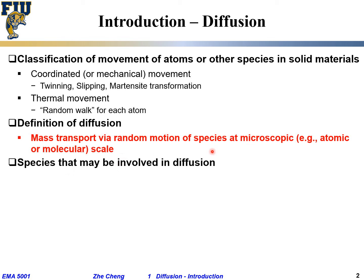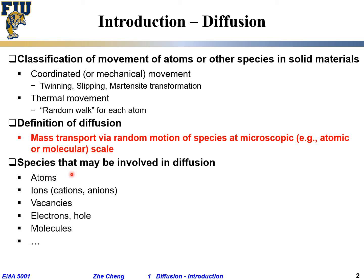Now let's take a look at what are the microscopic species that may be involved in diffusion. These could be individual atoms — hydrogen, carbon, nitrogen, iron, copper atoms. It can also be ions, which are atoms that have been stripped of part of their electron shells, becoming cations (positively charged) or anions (negatively charged). Examples of cations include proton or lithium ion; anions include fluorine ion or chlorine ion.